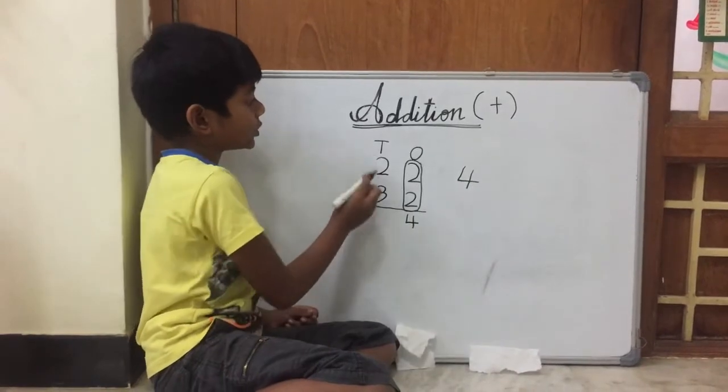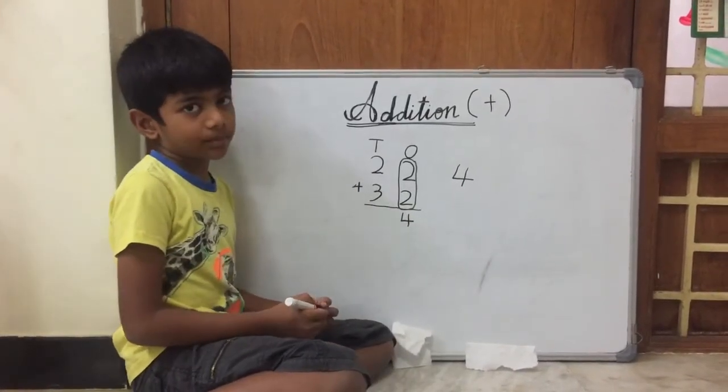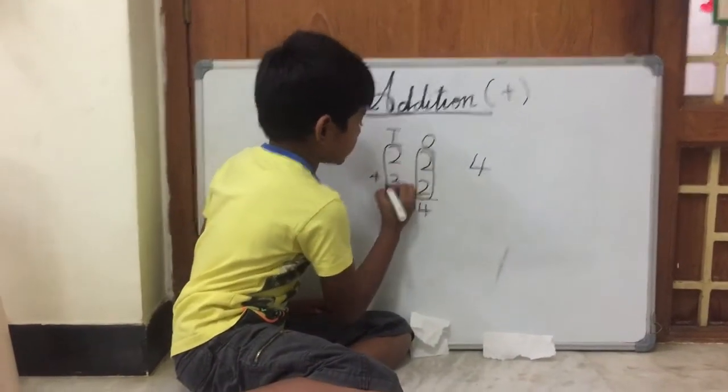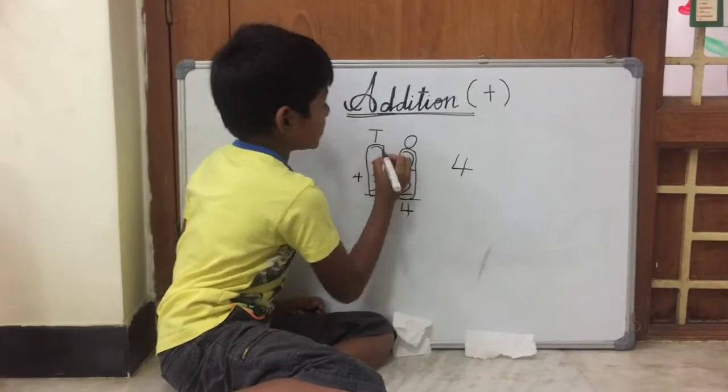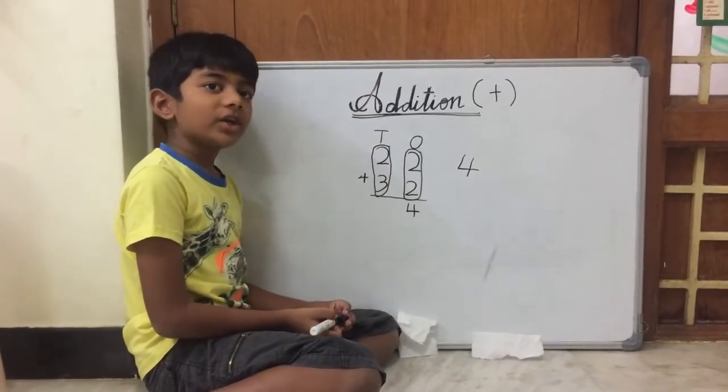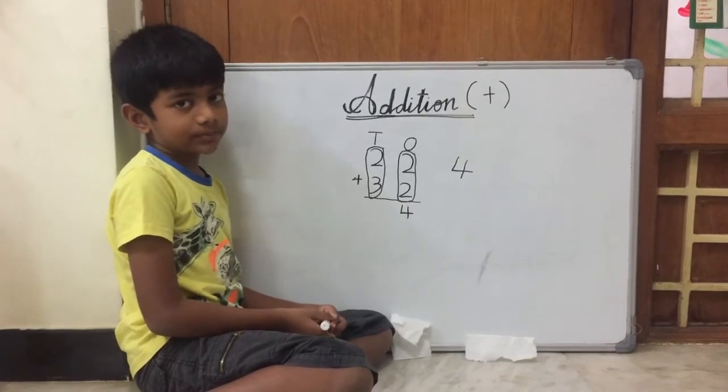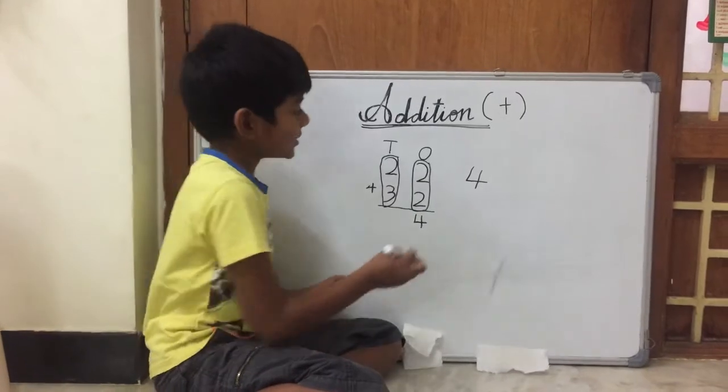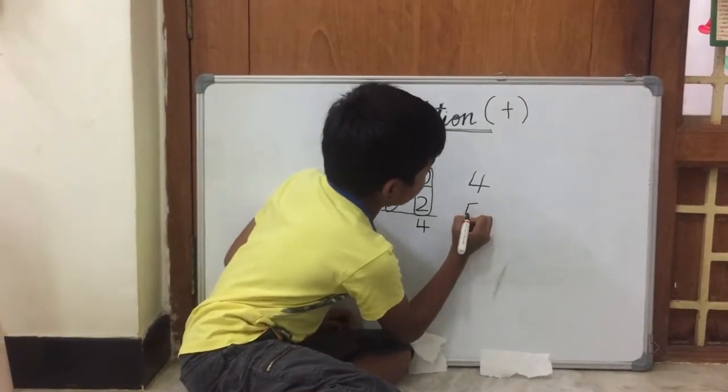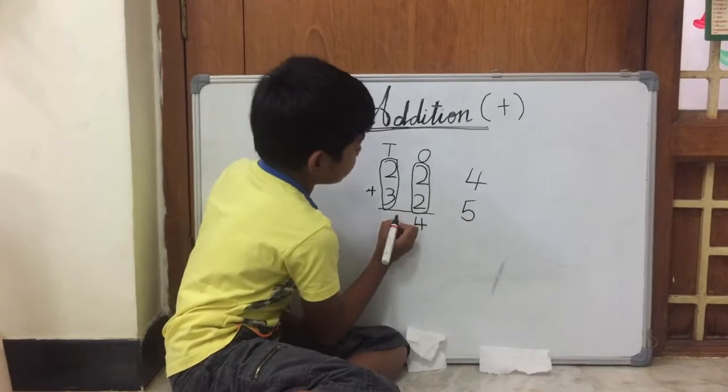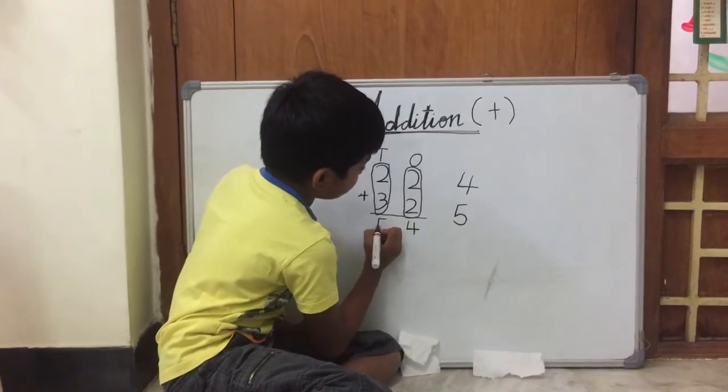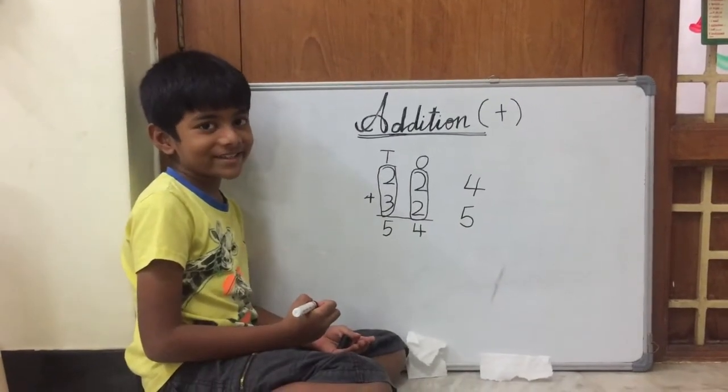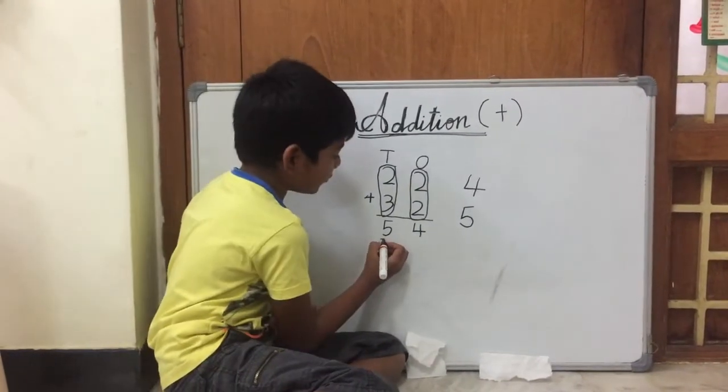Now we should add the 10's digit column. Now let's add these two numbers. What is 2 plus 3? Use the method Kanesh taught you. Yes! It is 5. So you should write 5 under the 10's column. Now what is the answer, friends? Yes! It is 54.